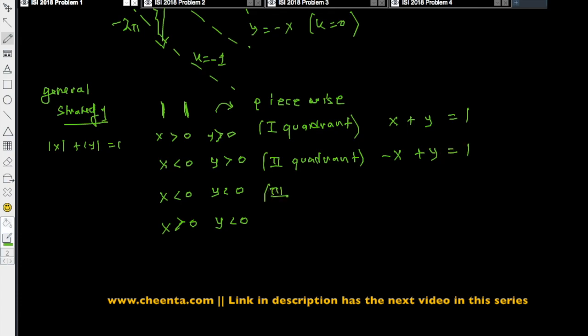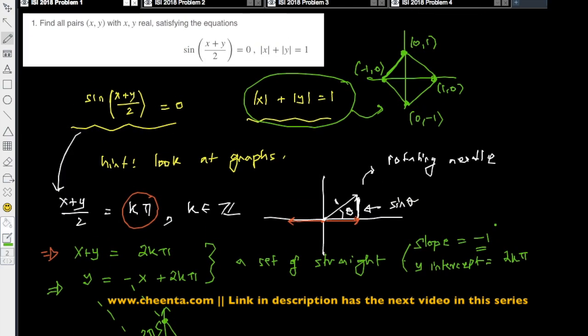Similarly, third quadrant is -x - y = 1, and finally, fourth quadrant is x - y = 1. So basically, draw these four lines, and you will see you will get exactly this picture.